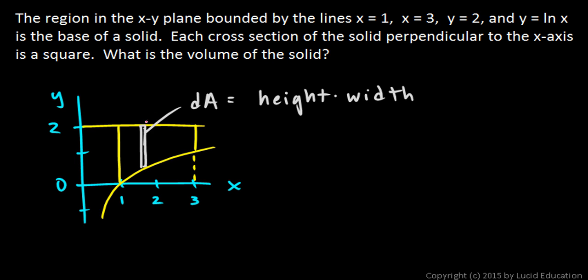The height is just going to be the high value minus the low value. So that's y equals 2 minus the value down here, which is natural log x. So the height of this little area is 2 minus natural log of x, and the width is dx.